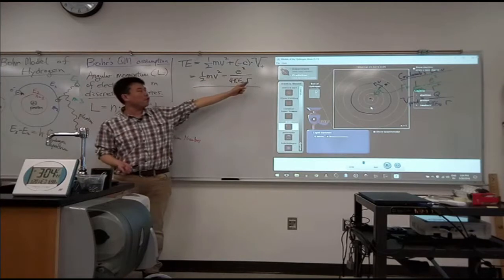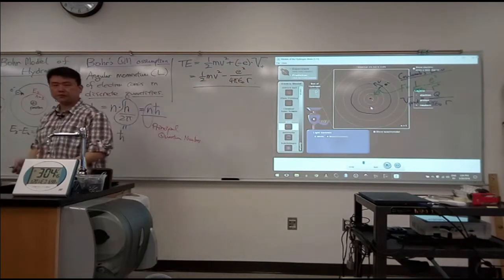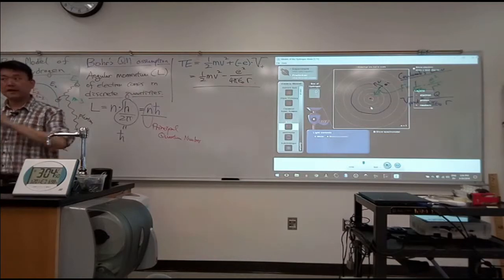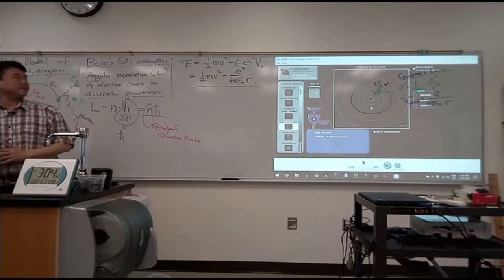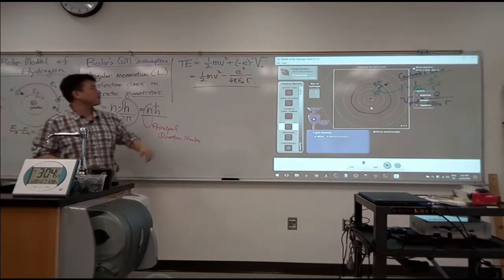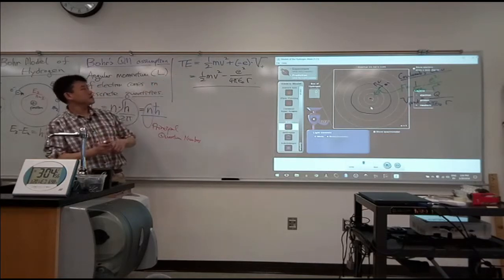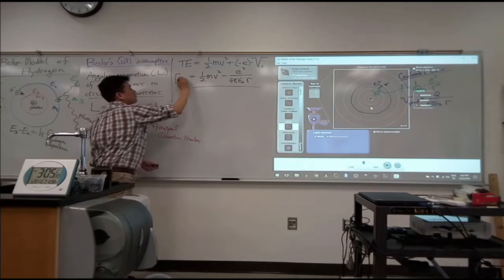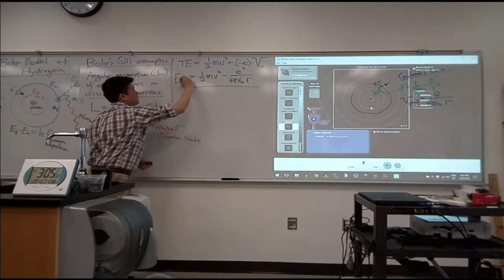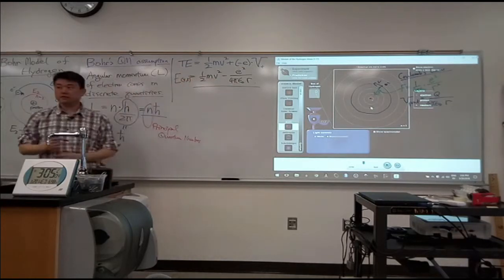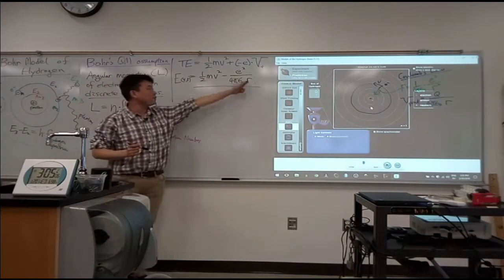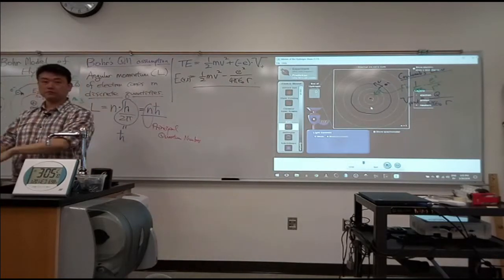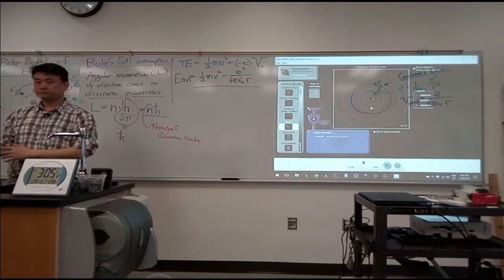All right. So a lot of the quantities here are constants. This is the mass of the electron. This is the electric constant. This is the elementary charge. Some things are variables or dynamic quantities. This is the speed and the orbital radius. Now, can this speed and the orbital radius take up any value?